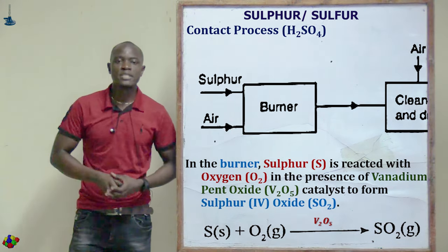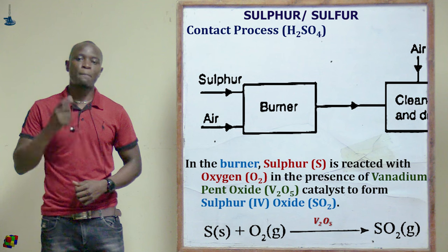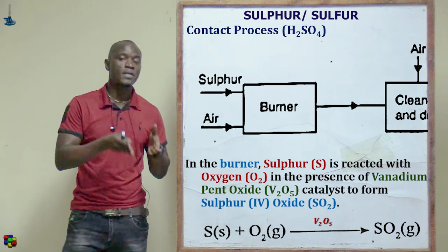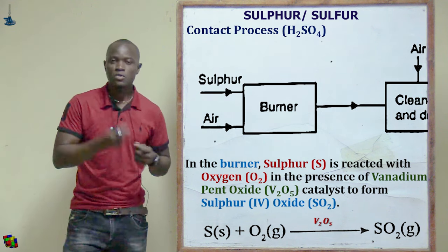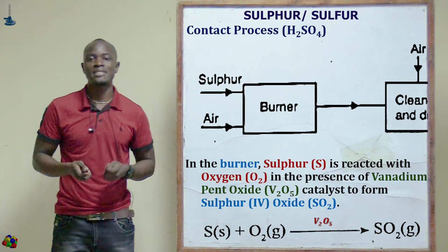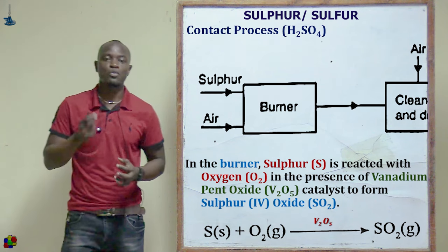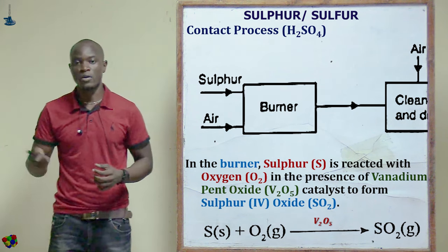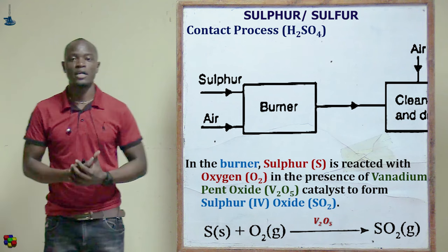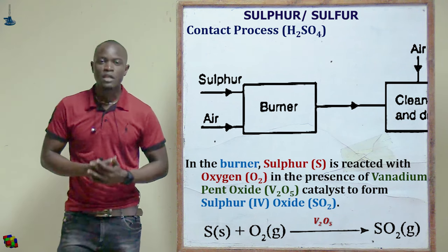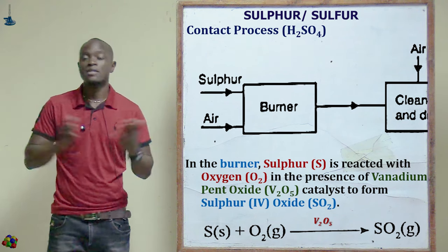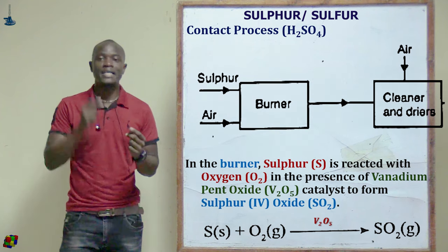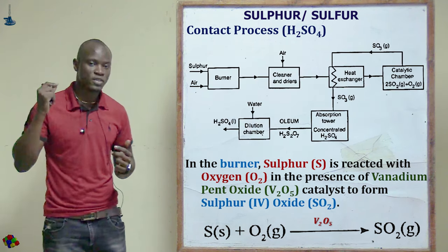In the burner chamber, sulfur is burnt in excess oxygen in order to produce sulfur dioxide (SO₂) gas, as per the reaction shown. That's all about the burner — sulfur is reacted with excess oxygen to produce sulfur dioxide gas.